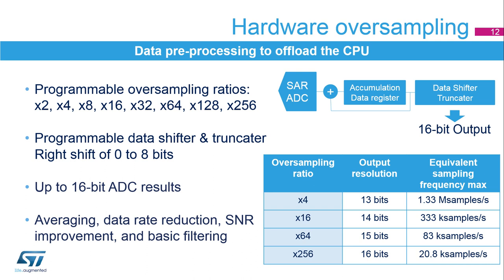The ADCs support hardware oversampling. They can sample by 2, 4, 8, 16, 32, 64, 128, and 256 times without CPU support. The converted data is accumulated in a register and the output can be processed by the data shifter and truncator. 12-bit data can be extended to be presented as 16-bit data. This functionality can be used as an averaging function or for data rate reduction and signal-to-noise ratio improvement, as well as for basic filtering.